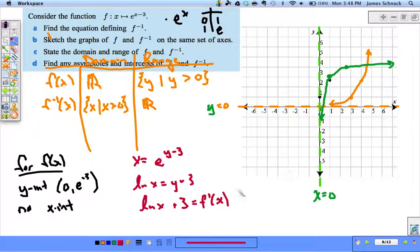Will it have a y-intercept? No. If I plug in x equals zero, natural log of zero is undefined. We can only log positive things.